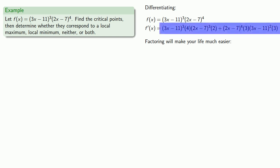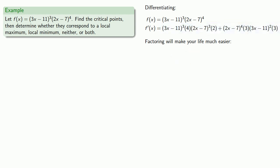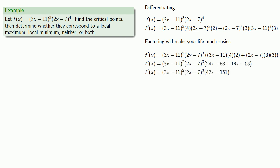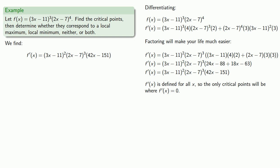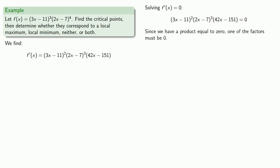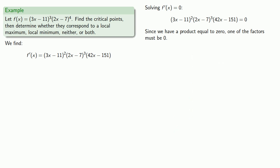Looking at this expression, we see that both terms have a common factor of (3x − 11)² · (2x − 7)³. Removing this common factor and simplifying gives us our factored derivative. Since this is a polynomial, the derivative is defined for all x, so the only critical points will be where the derivative equals zero. Setting each factor to zero, the critical points are at x = 11/3, x = 7/2, and x = 151/42.